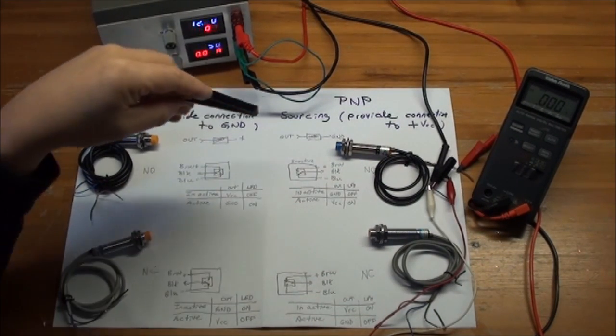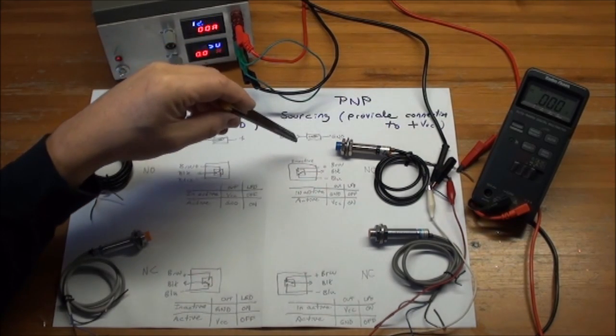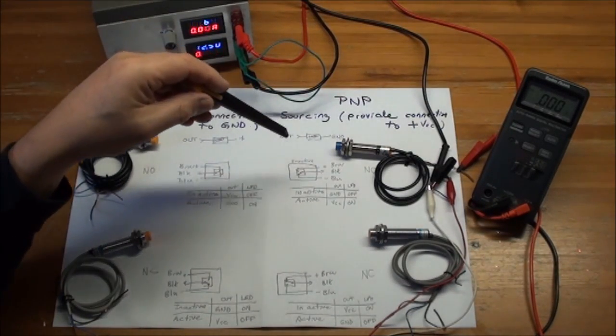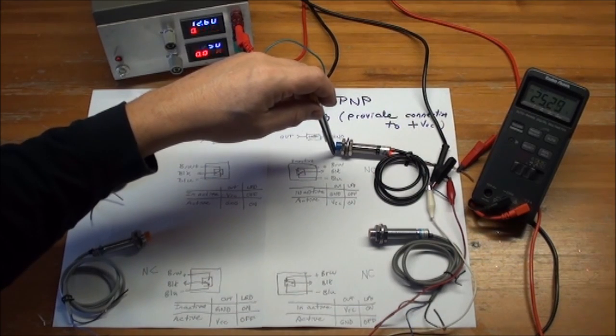Yeah, so now I have connected the PNP normally open. And in this case, you can see that you are getting zero out when it's not active. If you activate it, the LED goes on and you get the power supply out.